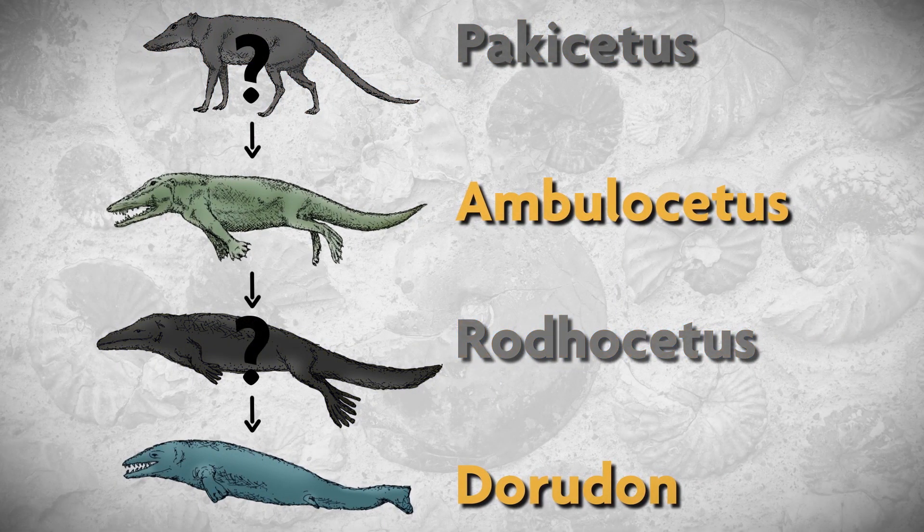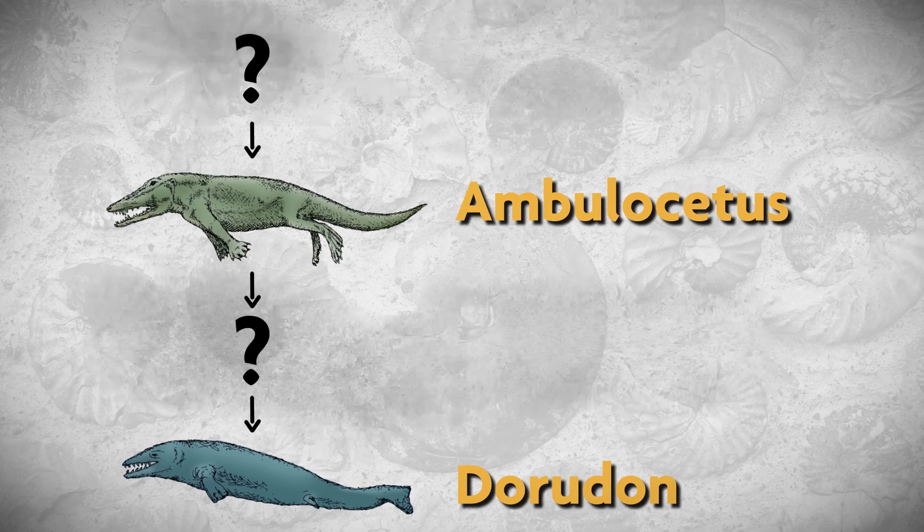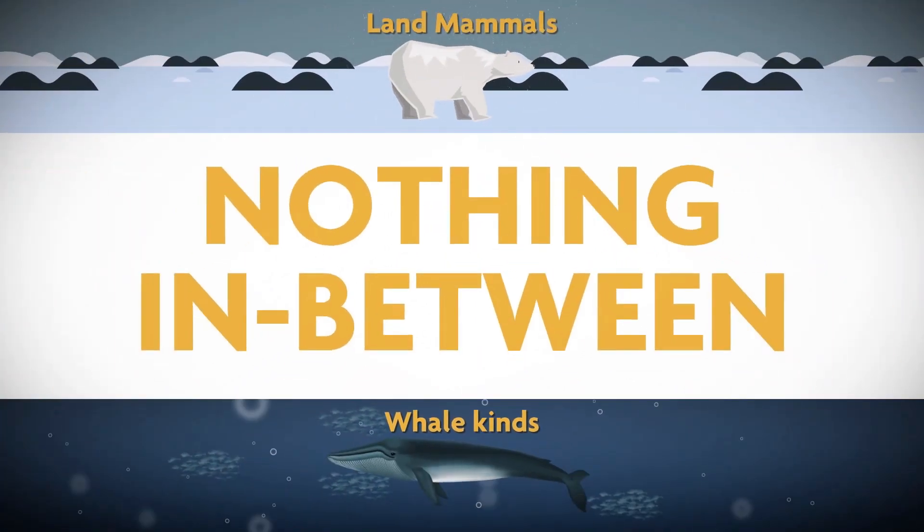Without Pachycetus or Rotocetus, the main missing links vanish from whale evolution. So, we have whale kinds or land mammals, but nothing in between.